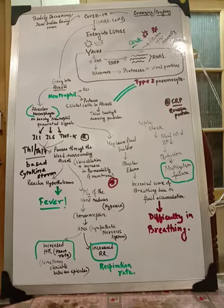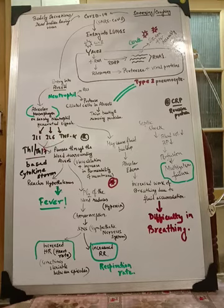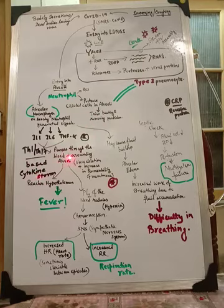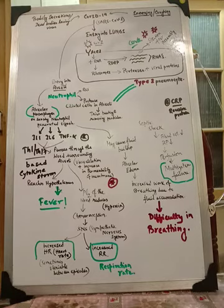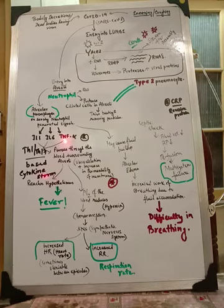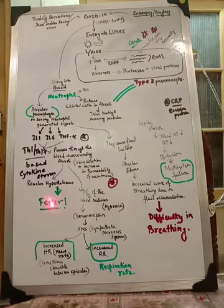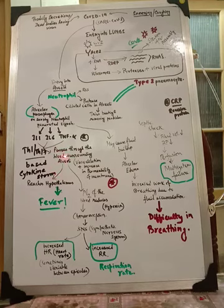On sensing these neutrophil and pneumocyte-generated signals, the alveolar macrophages produce IL-1, IL-6, and TNF-alpha, along with C-reactive protein. This IL-1, IL-6, and TNF-alpha all pass through the blood surrounding the alveoli. In this step, a cytokine storm involving TH1 and TH17 is happening inside the alveoli. As the cytokine storm forms and these signals pass through the blood, they reach the hypothalamus in the brain, causing fever — the first symptom.